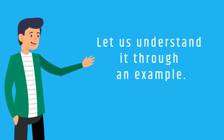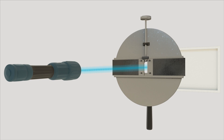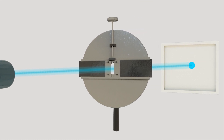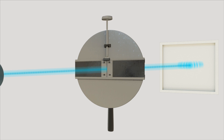Let us understand it through an example. Now here we have a laser light beam, and when we pass it through a narrow slit, we get the light beam as a spot shining on the screen. But as we begin to reduce the gap of the slit, as we expect, the spot shining on the screen gets smaller and smaller. But there comes a point when something strange happens — as we keep narrowing the distance, unexpectedly the spot gets wider.